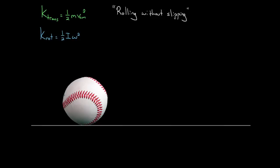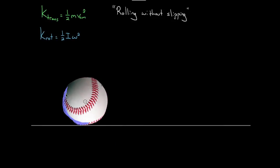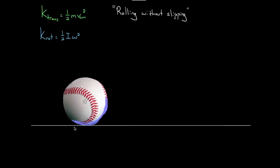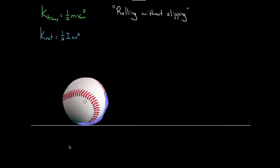Imagine we coat the outside of our baseball with paint, and then give it a roll forward without slipping. On the ground, it traces out a distance equal to however far it rolled. If this baseball rotates through some angle, it will have moved forward exactly that much arc length. Because if the baseball is rolling without slipping, as it rotates forward, it will have moved forward exactly the arc length it rotated through.